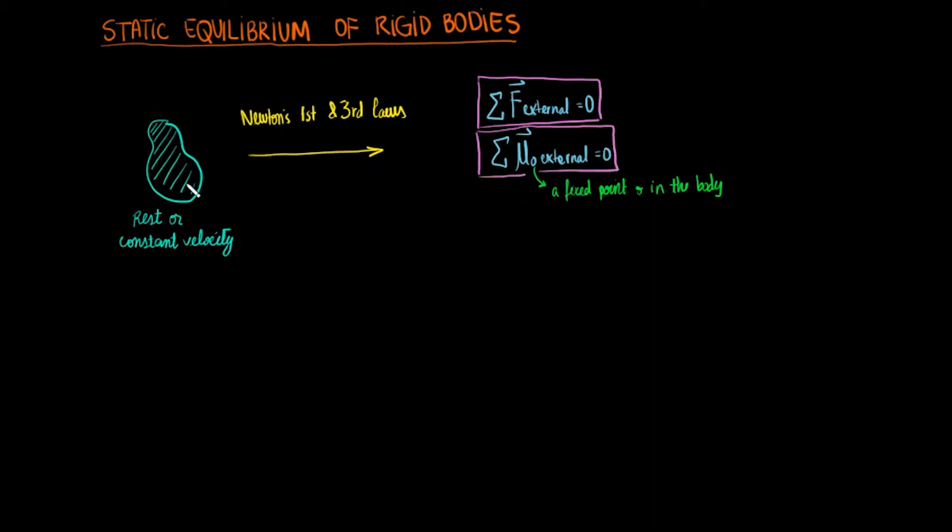That's when we really start solving for unknowns in our system. We will be using force and moment balance equations. But in solving for unknowns, it is important to remember that the number of unknowns and the number of balance equations we have must equal.